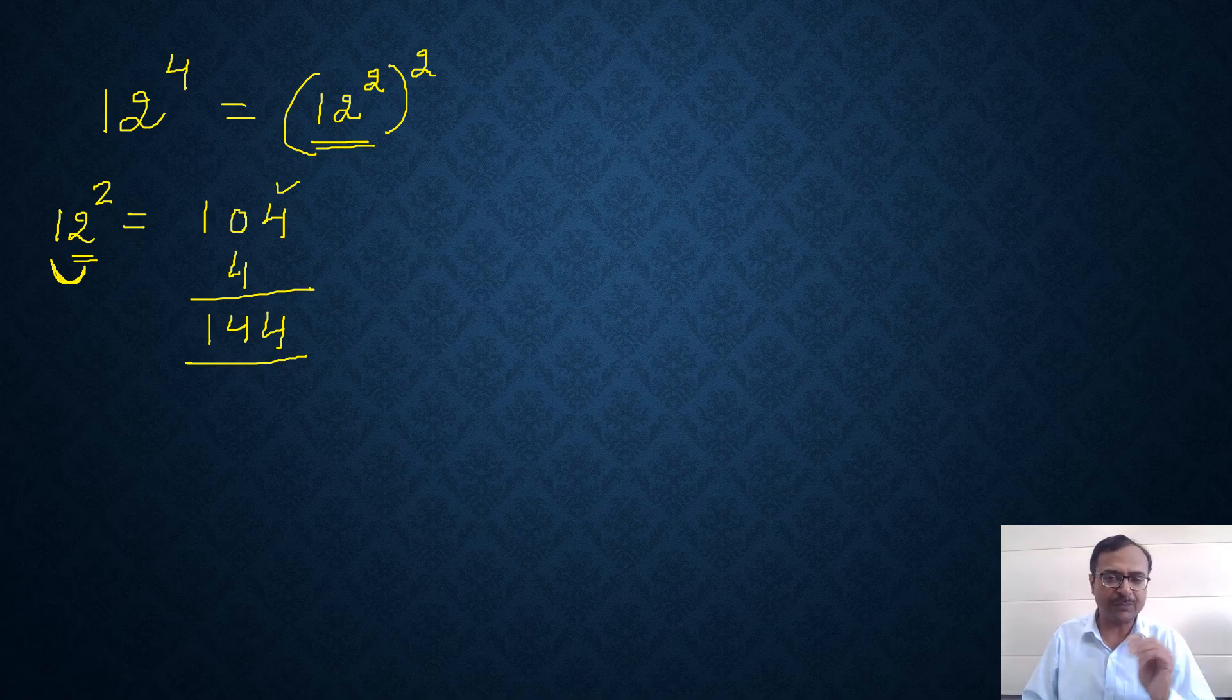That's the easiest possible trick of finding the square of a two digit number.